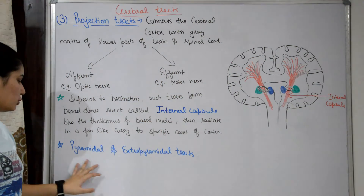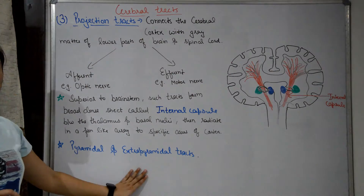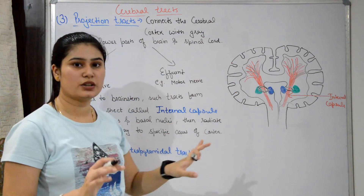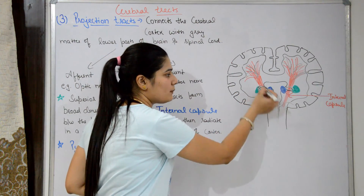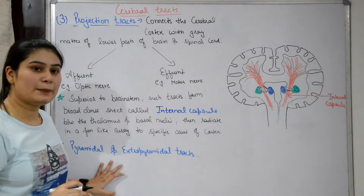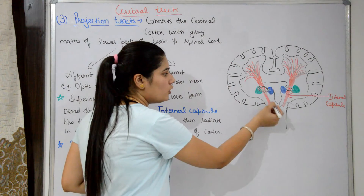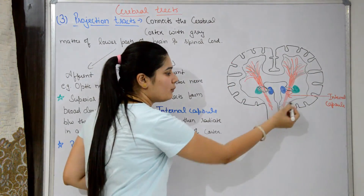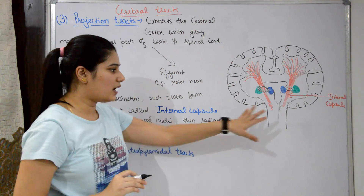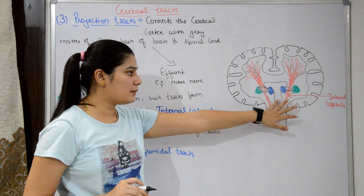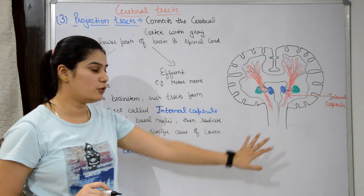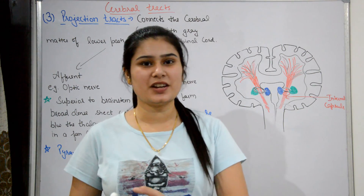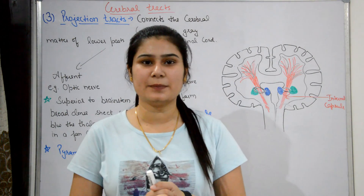Pyramidal tracks are motor fibers from the internal capsule. Extra-pyramidal tracks are motor fibers not from the internal capsule — they originate from different areas of the brain, such as the cerebellum, thalamus, and hypothalamus. If you like this video, please like, subscribe, and share my channel. Also do support women's empowerment. Thank you for watching.